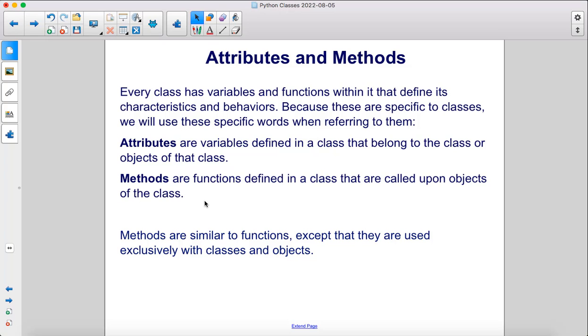Attributes are variables defined in a class that belong to the class or objects of that class. Methods are functions defined in a class that are called upon objects of the class. Methods are similar to functions, except that they are used exclusively with classes and objects.